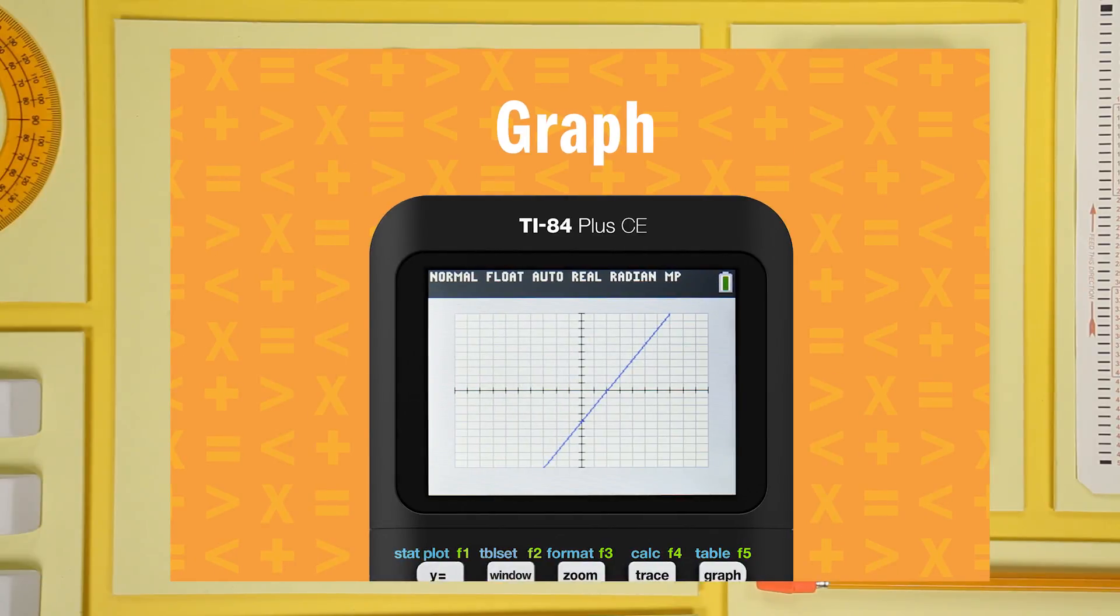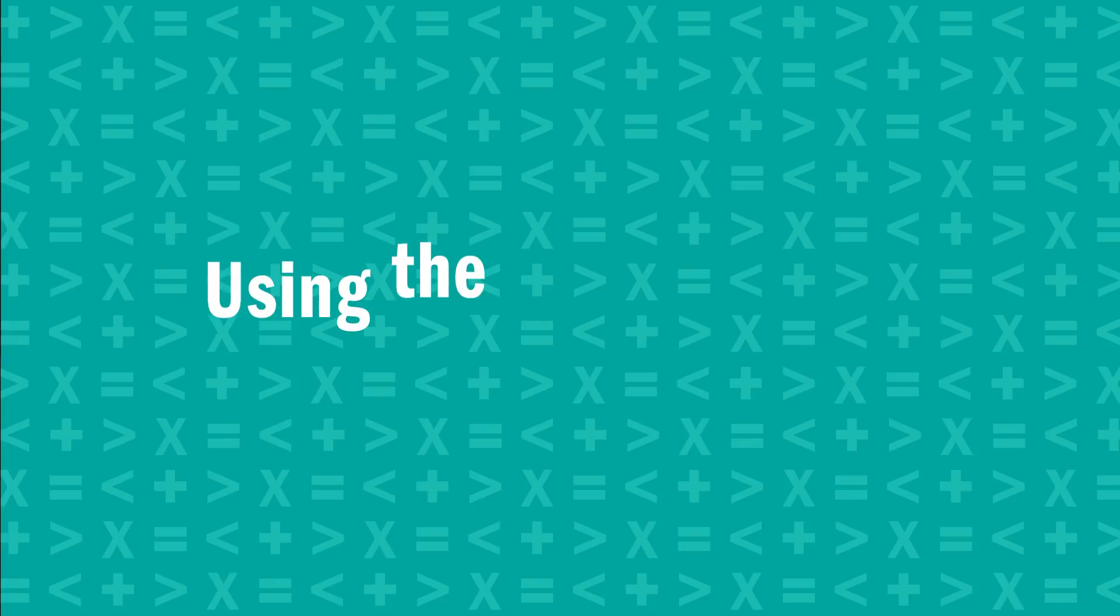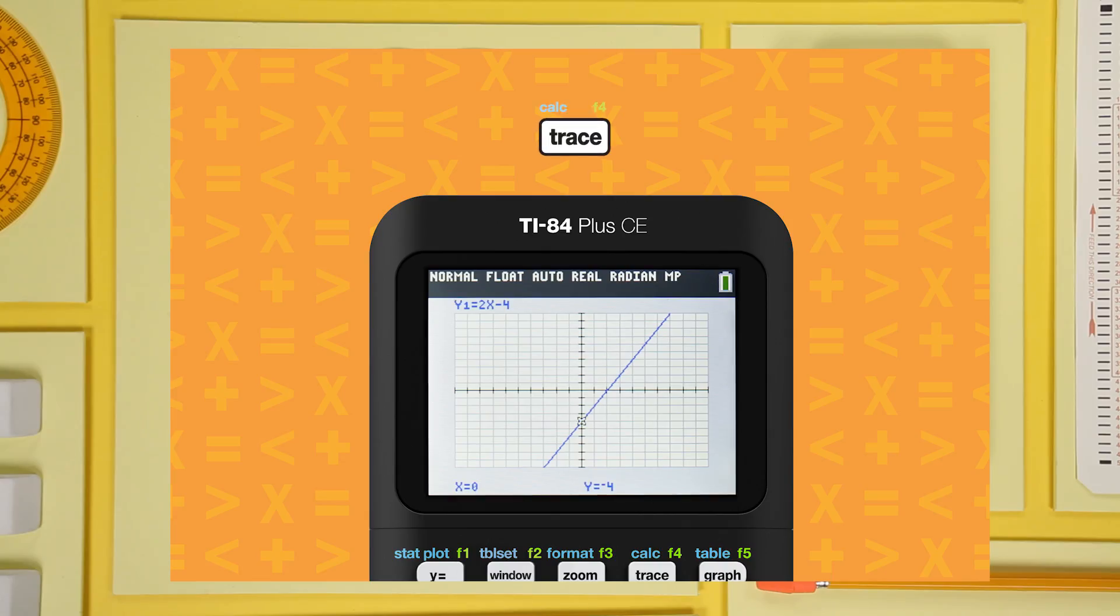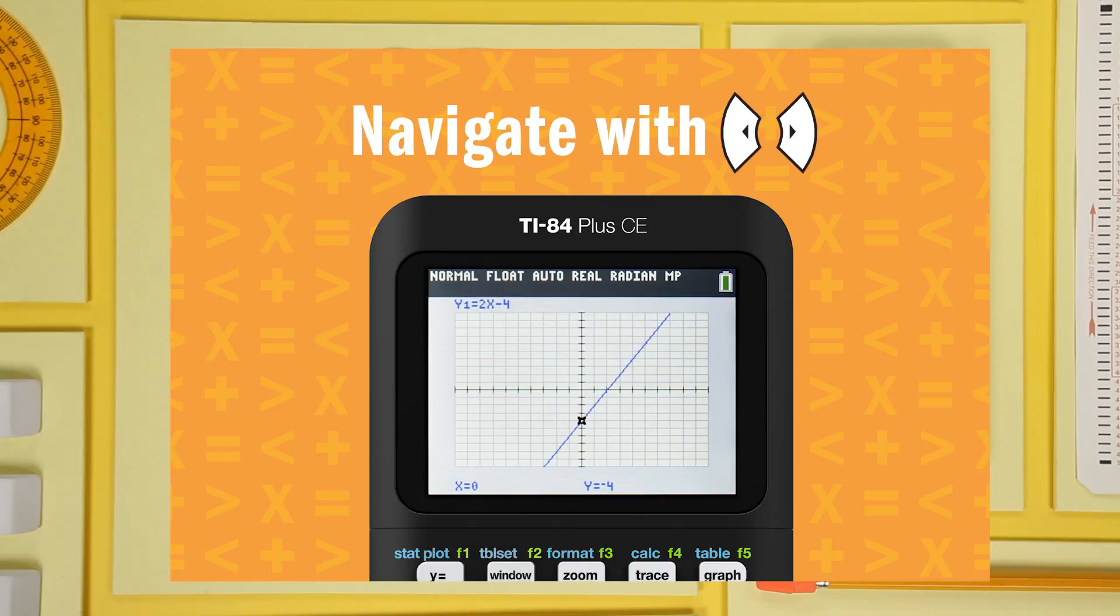Now, let's find a point on that graph using the trace feature. Press the trace key. That sets the cursor at the middle of the x values. Notice we see the values for x and y. You can right or left arrow to move along the function,